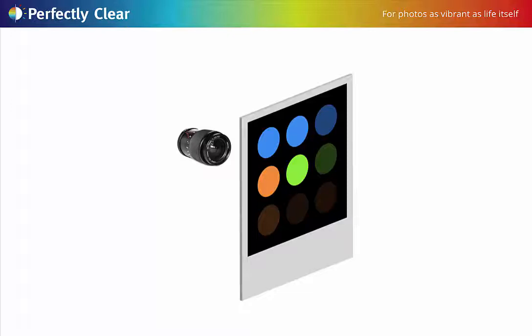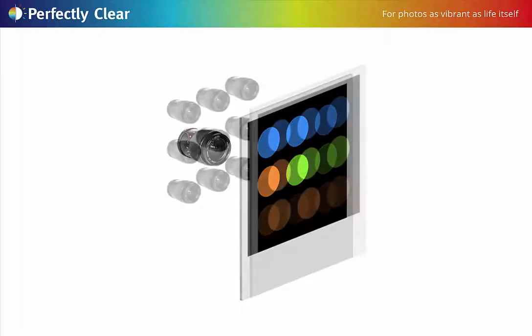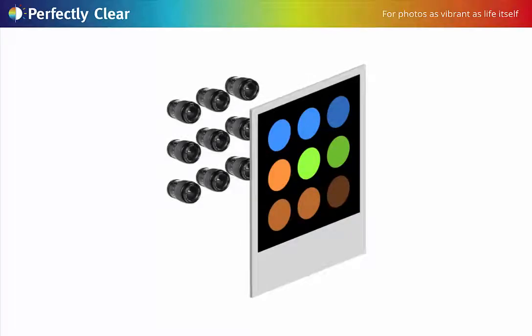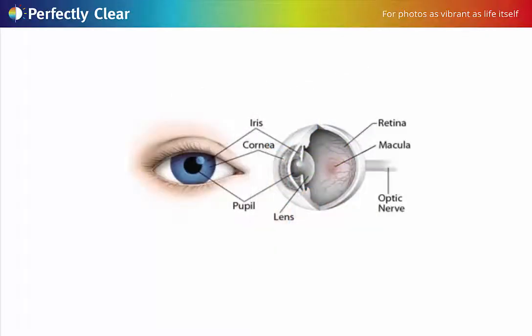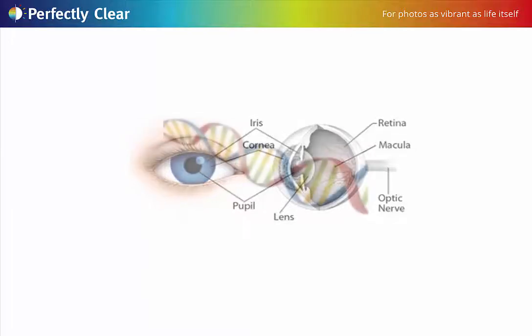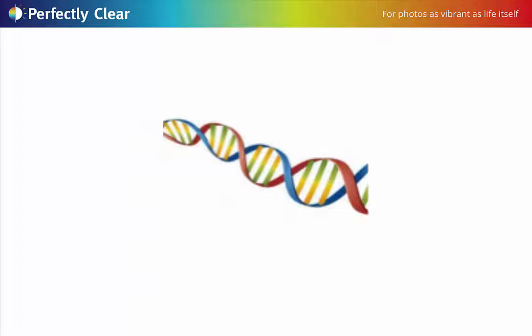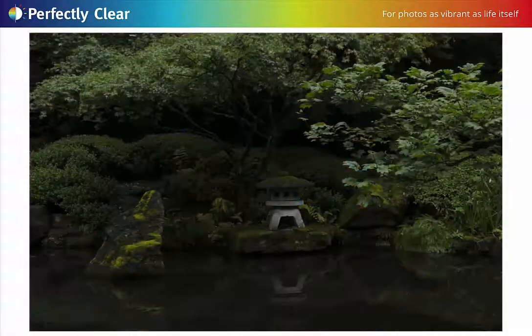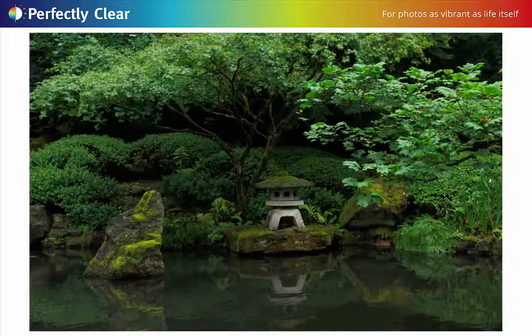Instead of relying on a single aperture to capture the entire dynamic range of the image, Perfectly Clear will correct each pixel independently as if it was taken with its own aperture. It's as if your 21 megapixel photo was taken with 21 million individual lenses, each with its own aperture adjustment for correct exposure. Perfectly Clear optimizes the dynamic properties of light and mimics the way our human eyes work. Most importantly, Perfectly Clear maintains the color DNA of the image, meaning your photos will be true to life with accurate colors.